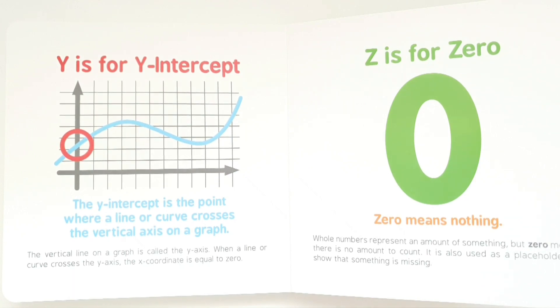Z is for zero. Zero means nothing. Whole numbers represent an amount of something, but zero means there is no amount to count. It is also used as a placeholder to show that something is missing.